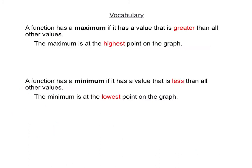Before we look at quadratic and absolute value functions, let's talk about two more vocabulary words. A function has a maximum if it has a value that is greater than all other values — the maximum is the highest point on the graph, where the graph looks like it has a highest point. If a function has a minimum, that means it has a value that is less than all other values — this is the lowest point on the graph. When we look at quadratic and absolute value functions, each will have either a maximum or a minimum.